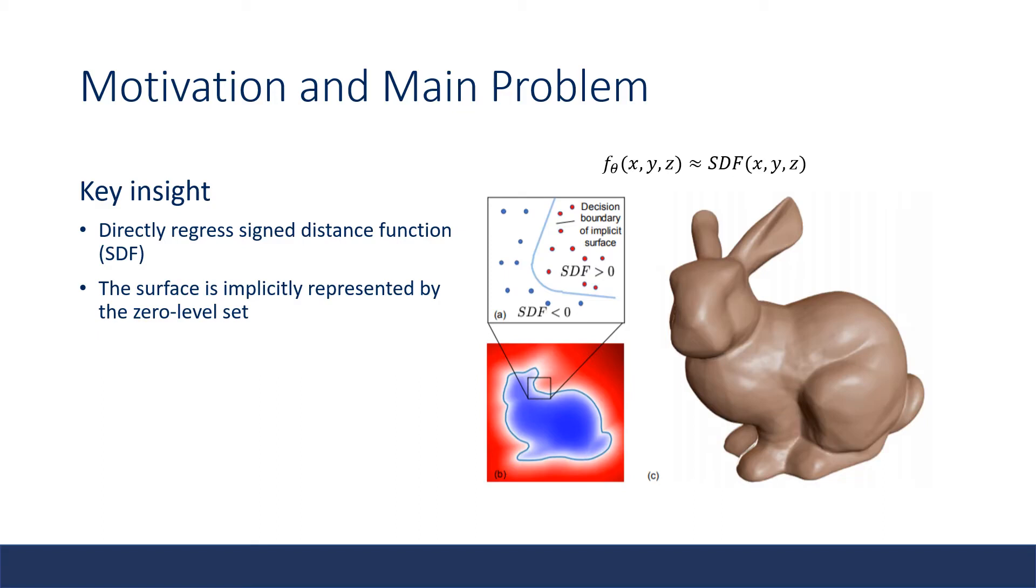The key insight of this work is to directly regress the continuous sign distance field using a neural network. A sign distance function is a continuous function that, for a given point in 3D space, outputs the point's distance to the closest surface, with a sign encoding whether the point is inside or outside the watertight mesh. The underlying surface boundary is implicitly represented by the ISO surface, in which case SDF value equals to zero.